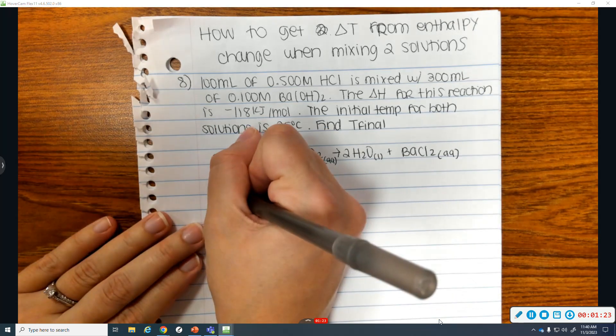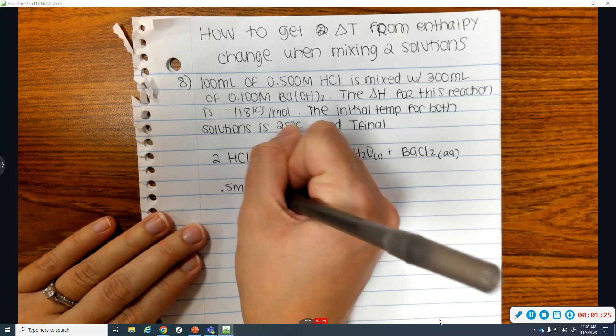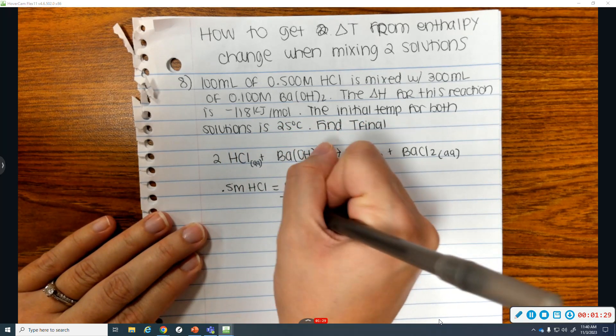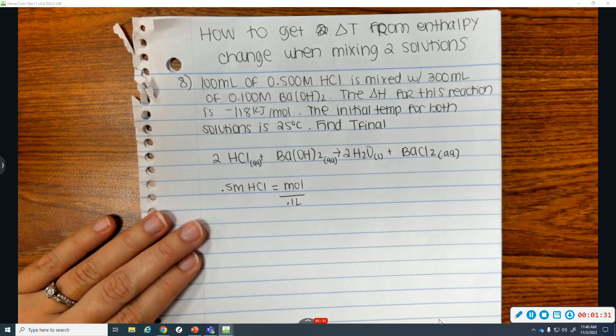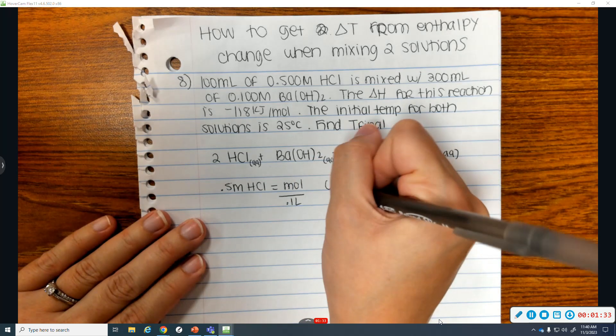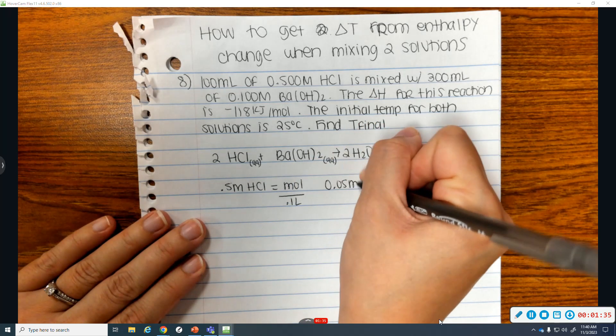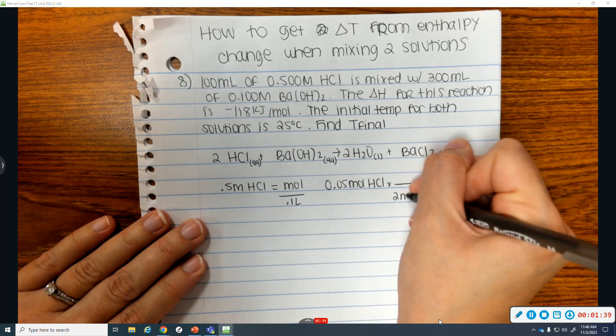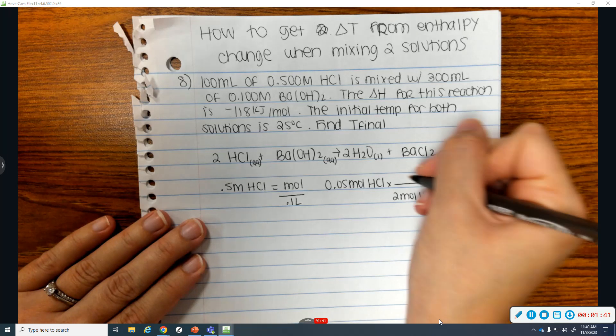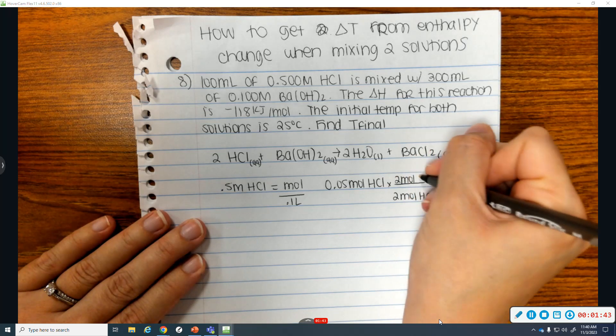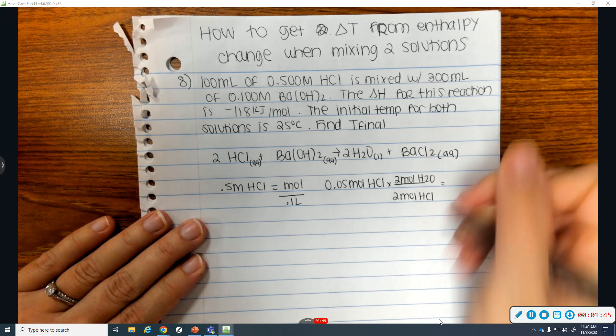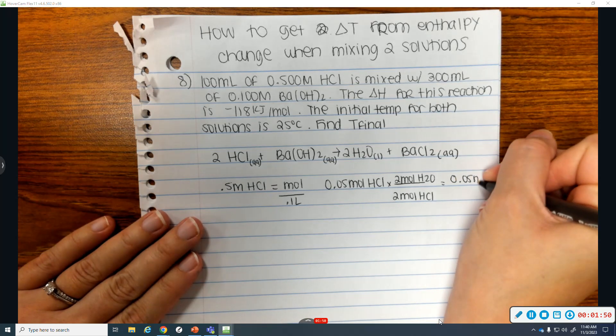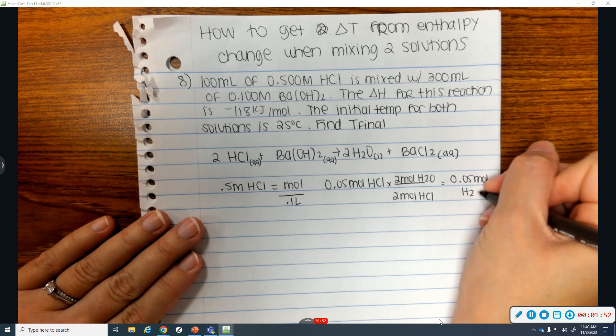So, HCl 0.5 M HCl equals moles over 0.1 liter. 100 milliliters. That means there's 0.05 moles of HCl. Two moles HCl. So, two moles water. You don't have to solve for water. That's just the reactant I solve for. That would make 0.05 moles of H2O.